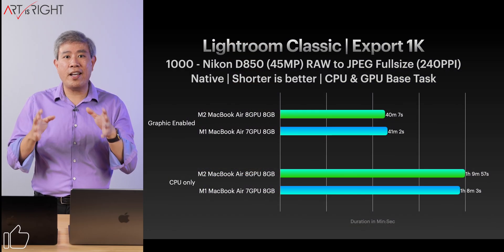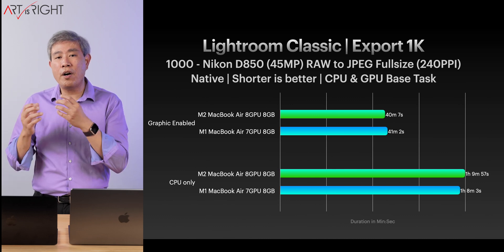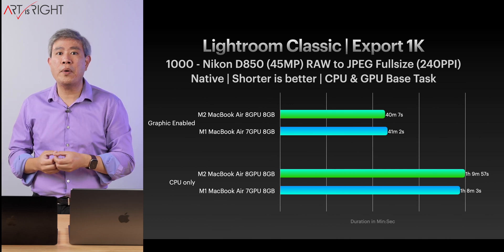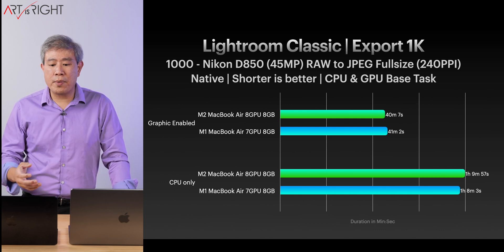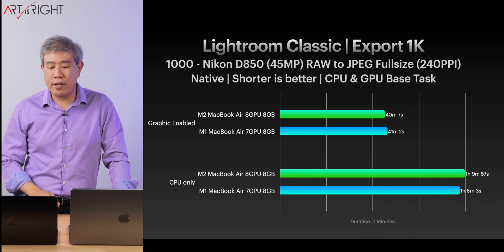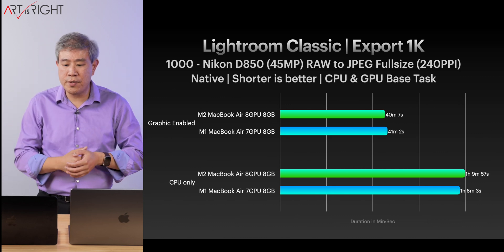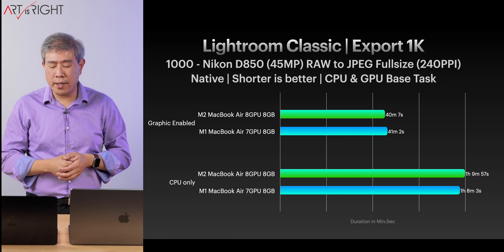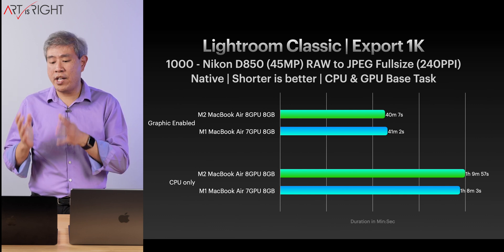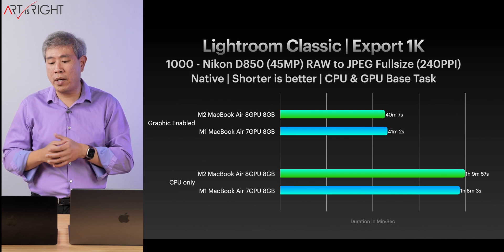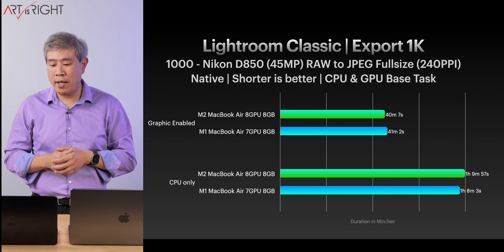Before we get into checking how to enable that, I want to quickly show you an export result so you have an idea of how much faster it's going to be. What you're seeing right now is Lightroom Classic exporting 1000 Nikon D850 RAW files to full-size JPEG. With GPU enabled, we now have an export time of around 40-41 minutes for the M2 MacBook Air and M1 MacBook Air, respectively.